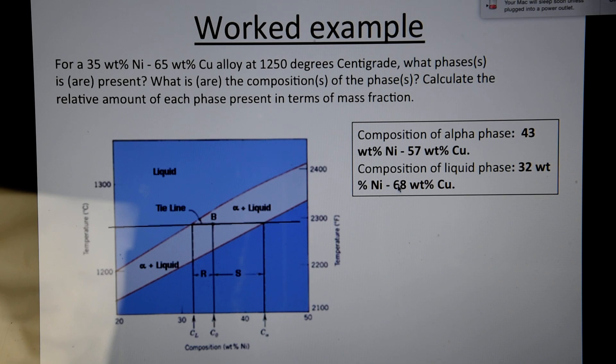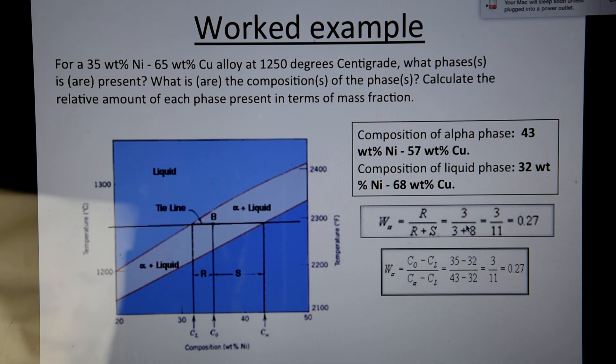And this also translates to 68% of copper. And the third part of the question is asking us to find the weight percent or the mass fraction. To calculate that, W alpha, you need to take this value here, R over R plus S, which then is 3 over 3 plus 8. So if you look at it in terms of composition, R represents C0 minus CL divided by S, which is this region here, C alpha minus CL.